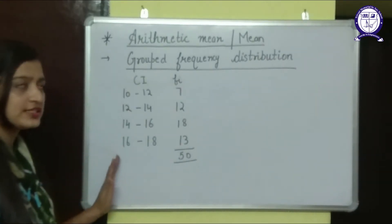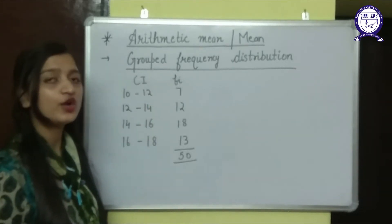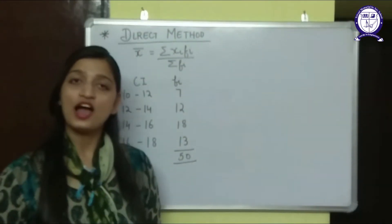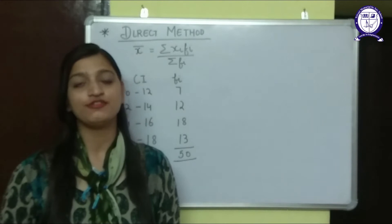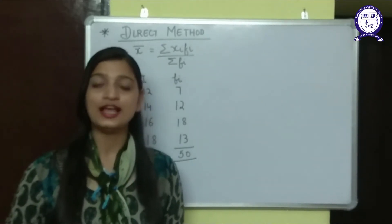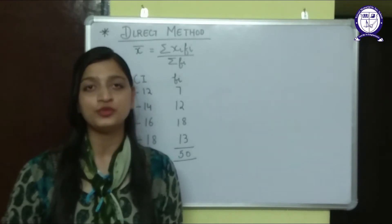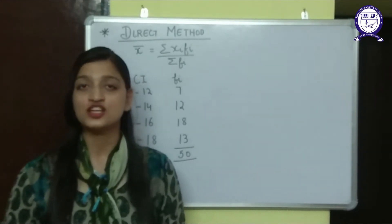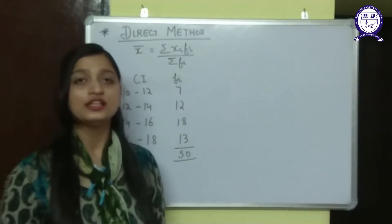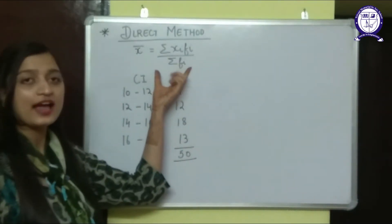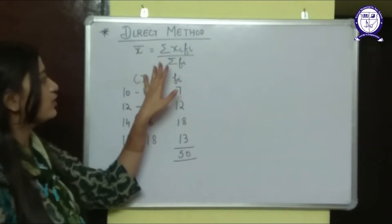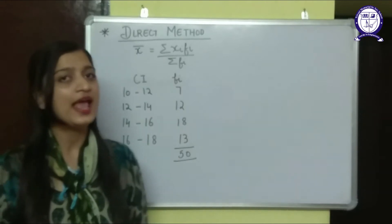We are going to learn how to find the mean of grouped frequency distribution. We have two methods: the first one is the direct method, and the second one is the assumed mean method, also known as the shortcut method. In the direct method, the formula for mean is the same as for ungrouped frequency distribution: x-bar equals summation f_i x_i upon summation f_i.